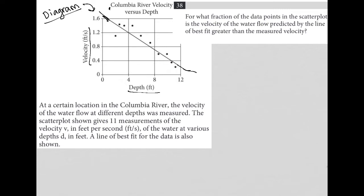So the information provided to us says at a certain location in the Columbia River, the velocity of the water flow at different depths was measured. The scatter plot shown gives 11 measurements of the velocity V in feet per second of the water at various depths D in feet. A line of best fit for the data is also shown.